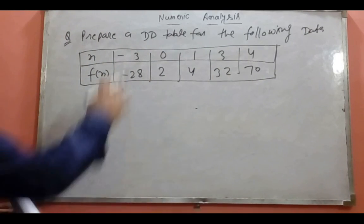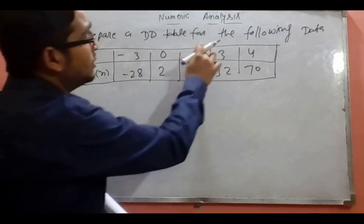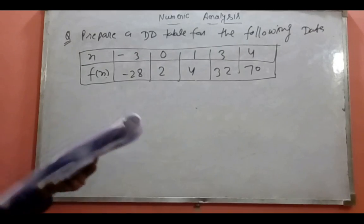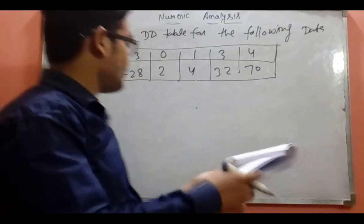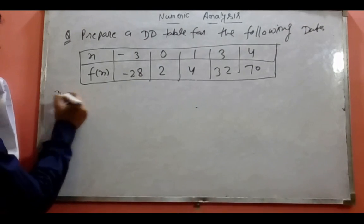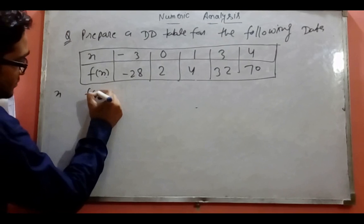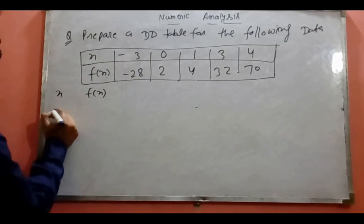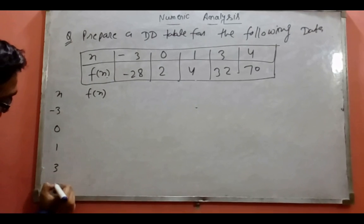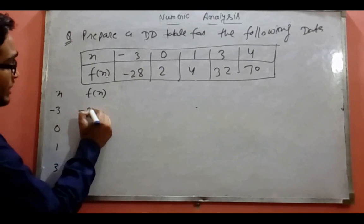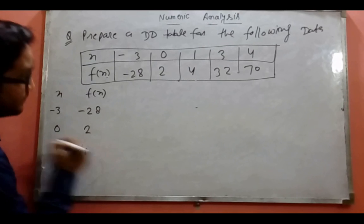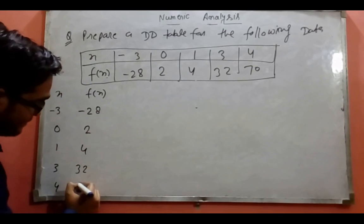Here we have x values: -3, 0, 1, 3, and 4 given. Now we have the divide difference table. We have x and f(x): x values are -3, 0, 1, 3, and 4, with f(x) values y0=-28, y1=2, y2=4, y3=32, and y4=70.